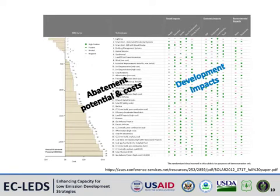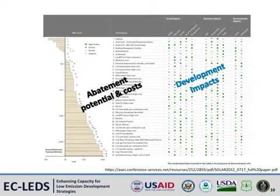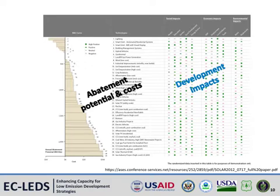To do this, the framework essentially flips the MAC curve on its side, putting the lowest cost options on the top and the highest cost options on the bottom. The framework then integrates a number of columns for specific development impacts. These columns allow development impact scores to be presented for each LEADS option, building on the abatement potential and cost information.